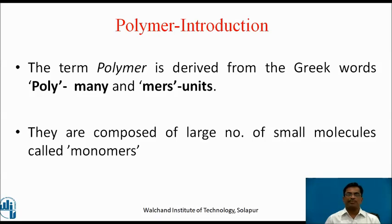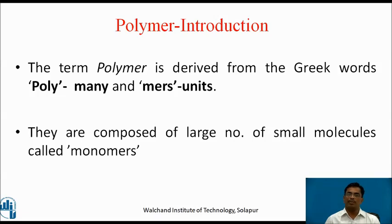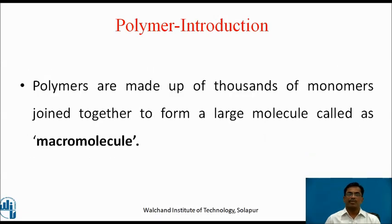Polymer Introduction. The term polymer is derived from the Greek word — poly means many and mer means units. They are composed of a large number of small molecules called monomers. Polymers are made up of thousands of monomers, joined together to form a large molecule called a macromolecule.